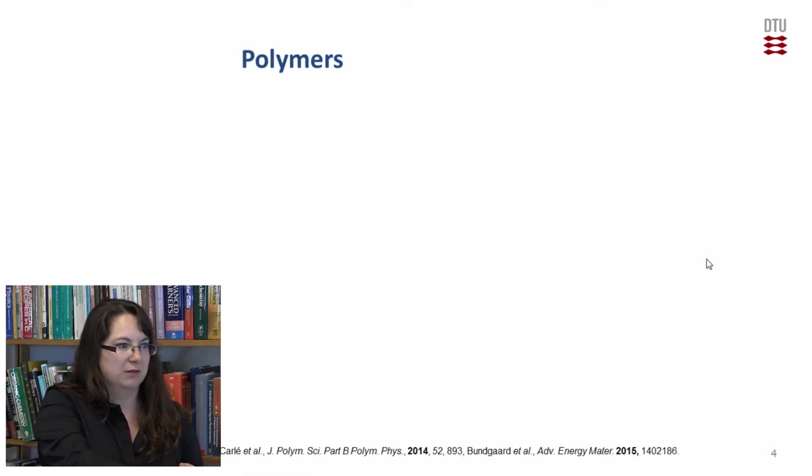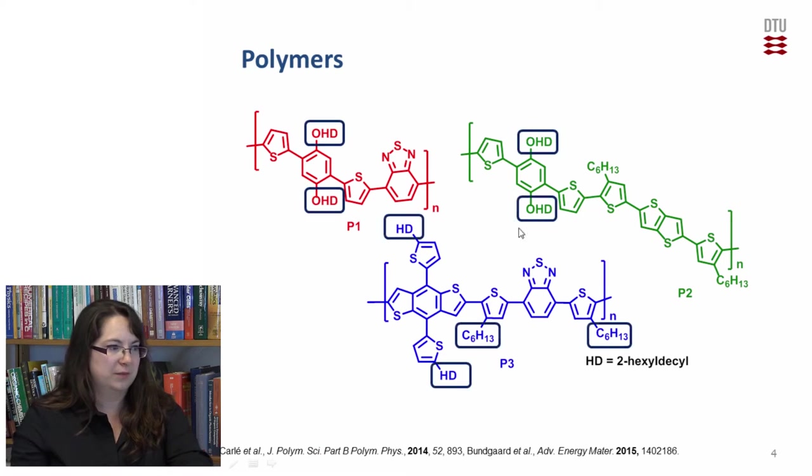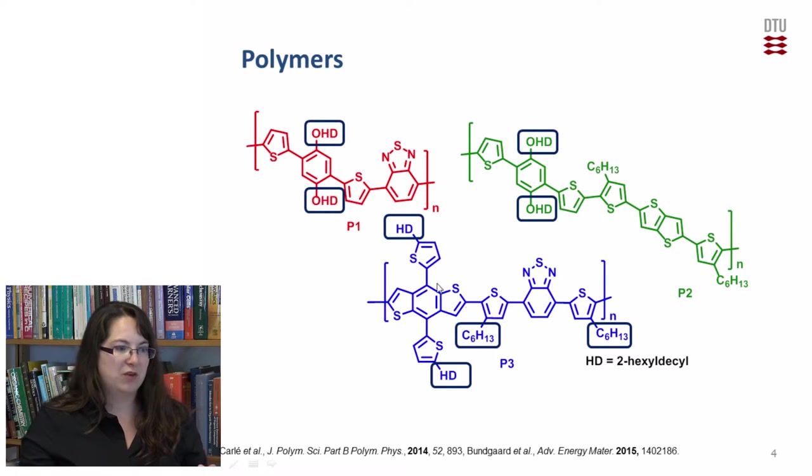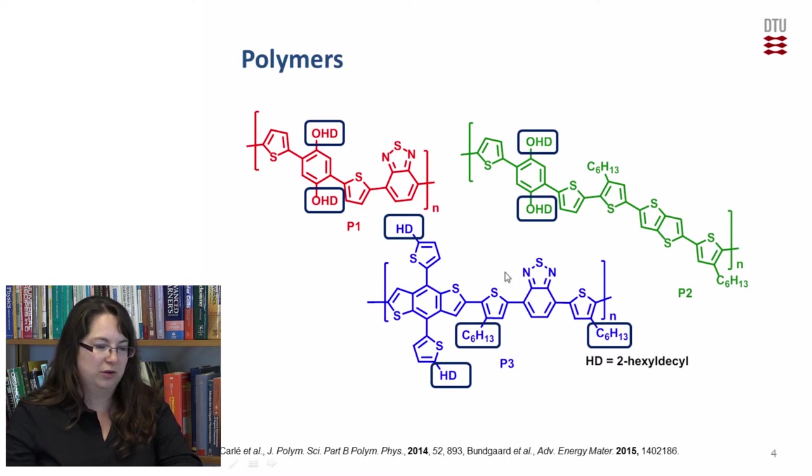So the polymers I used were D3, P1, P2 and P3. Because they have different side chains, P1 and P2 have the hexadecyl side chain which I manipulated, while P3 has also the hexadecyl side chain but also I manipulated the hexadecyl side chain in the acceptor part of this polymer.